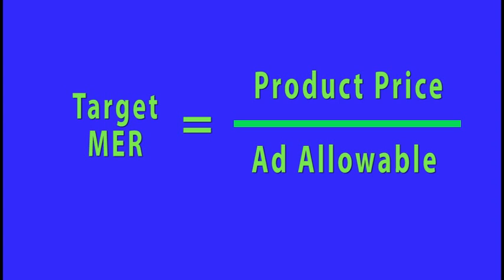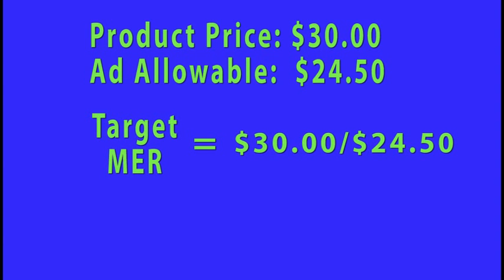So, going back to our example, our exercise device costs $30, and our ad allowable is $24.50. Then our MER is $30 divided by $24.50, which creates a target MER of 1.2.